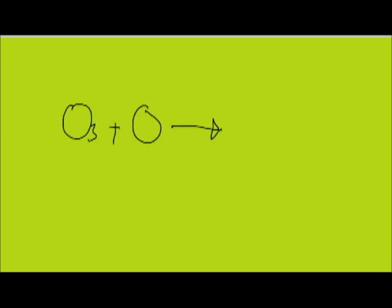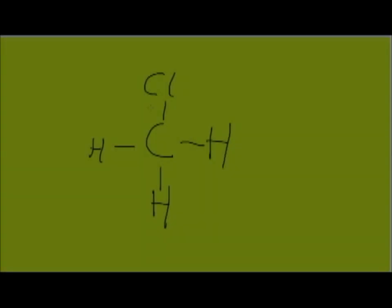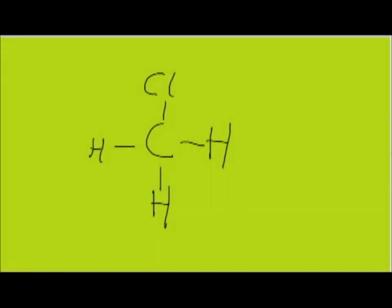There are two main equations that are needed for ozone depletion. Both of them have the overall equation: O3 plus O forms 2O2. This is ozone, this is what it reacts with, and this is what it breaks down into. As is popularly known, chlorofluorocarbons can break down the atmosphere, which is the general formula I've just shown.